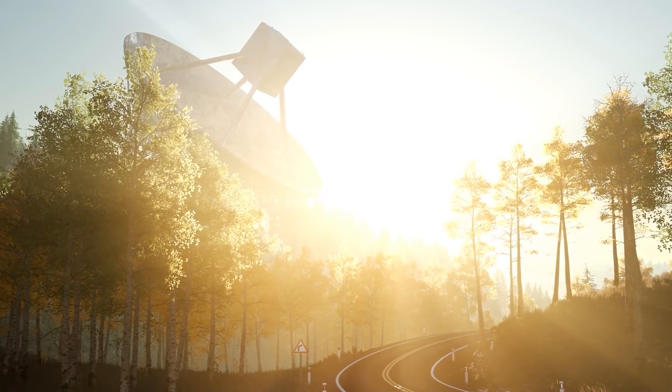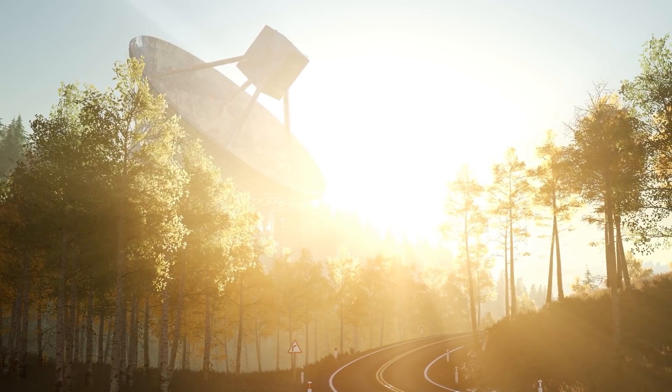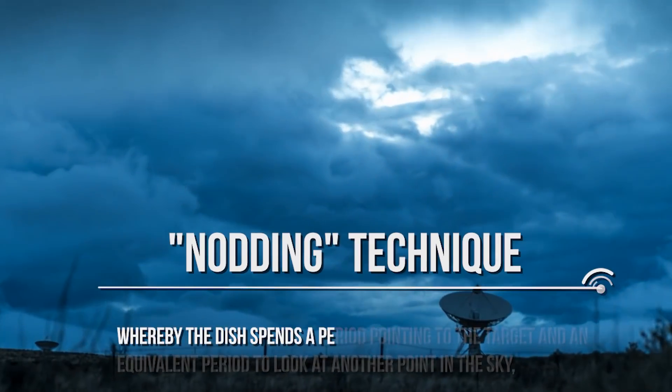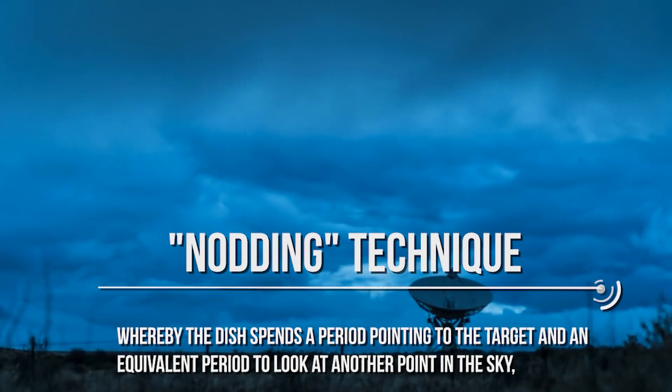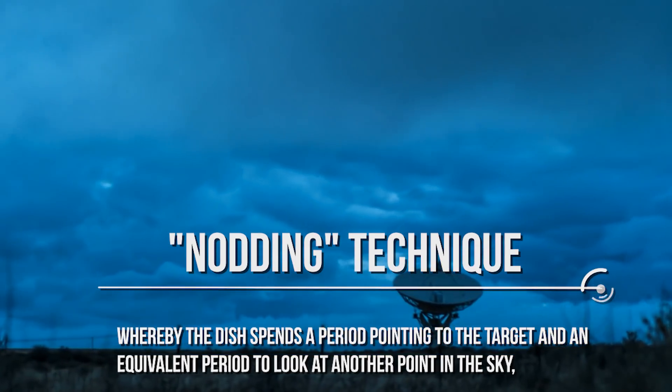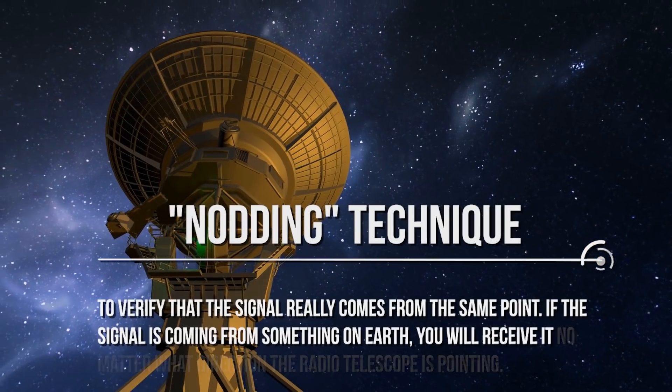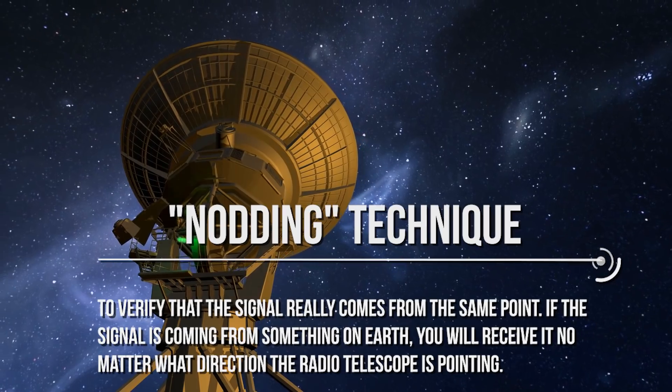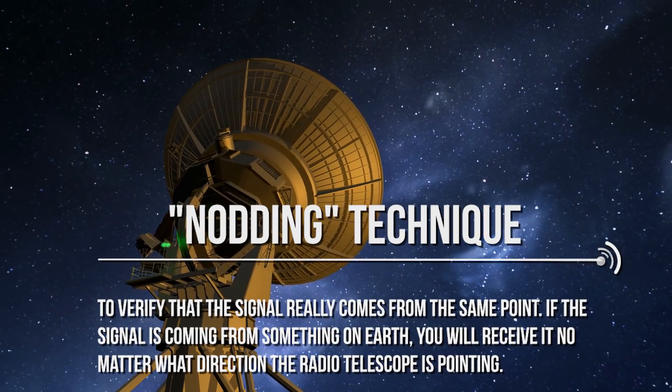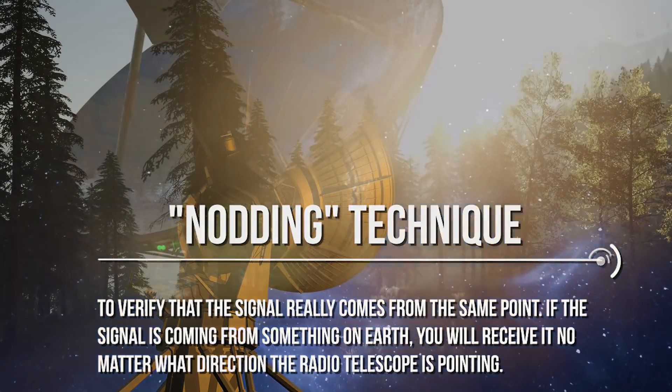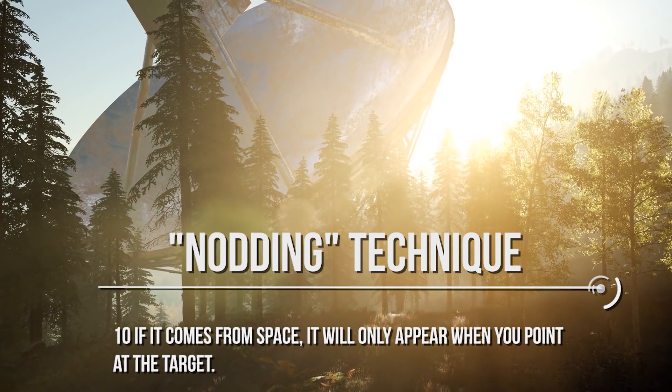And this is also a clue in favor, the radio telescope, which had recorded the signal in scans lasting 30 minutes over a week, had correctly used the so-called nodding technique, whereby the dish spends a period pointing to the target and an equivalent period to look at another point in the sky, to verify that the signal really comes from the same point. If the signal is coming from something on Earth, you will receive it no matter what direction the radio telescope is pointing. If it comes from space, it will only appear when you point at the target.